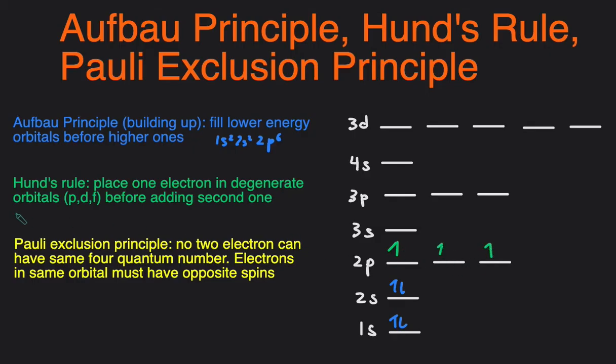So the way I remember Hund's Rule is when you write an H, you go 1, 1. That's how I write an H, at least. You put 1 over here, 1 over here, so I just remember 1, 1, 1, 2, 2, 2.